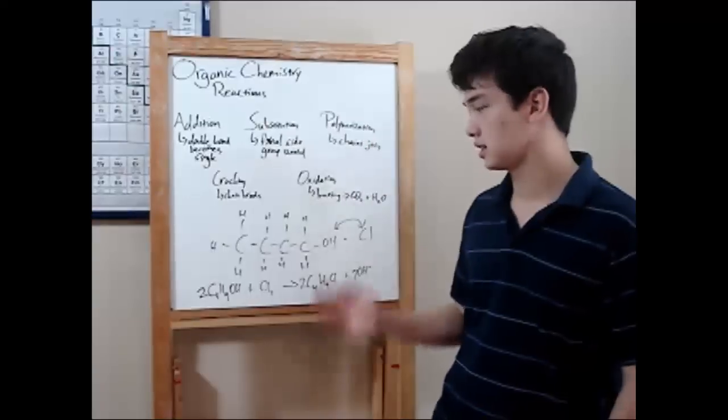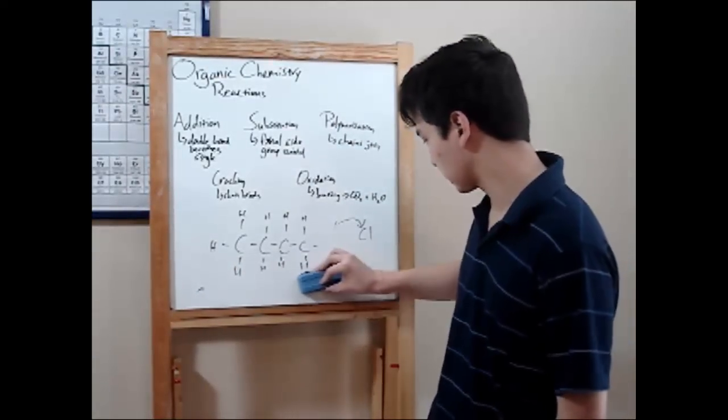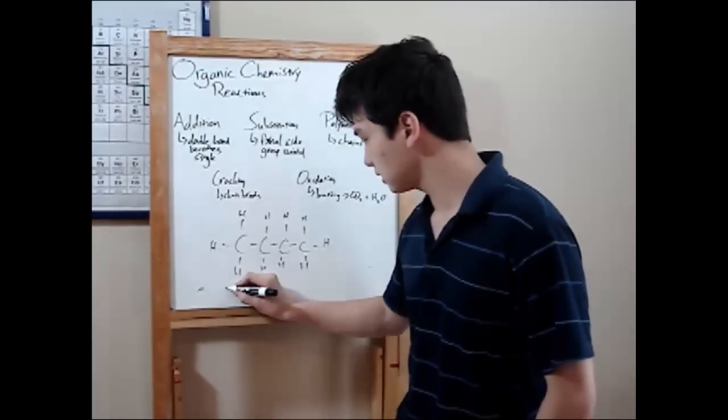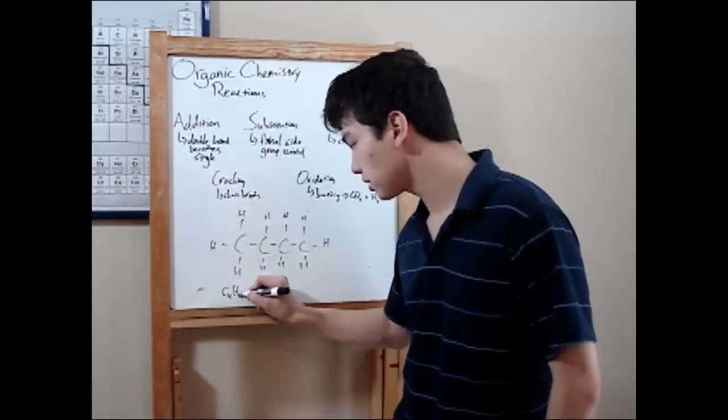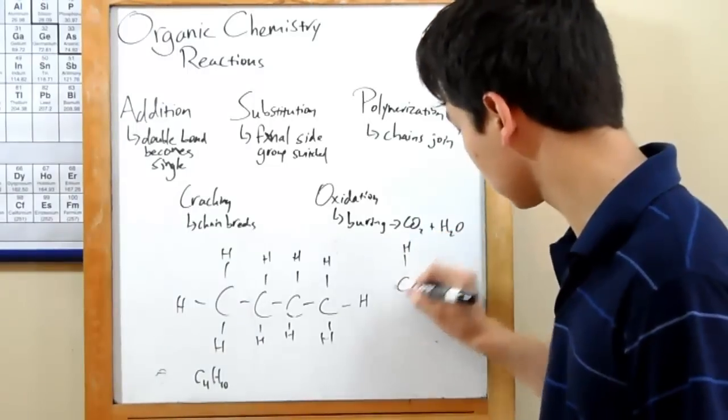Next, polymerization. That's when carbon chains join. Let's switch everything back and give us butane again. C4H10. Well, if we bring in another carbon chain, let's bring in a small two-carbon. That's ethane.